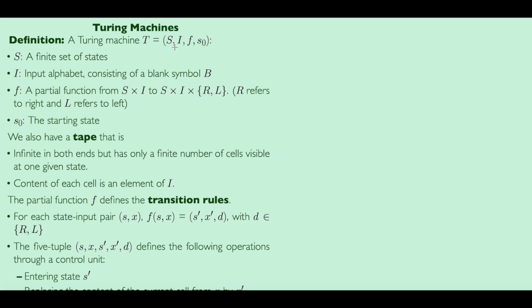In this video we will start talking about Turing machines. As usual, let's start with the definition. A Turing machine T is composed of four things: a set of states, an input symbol, a mapping, and a starting state.